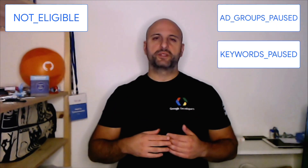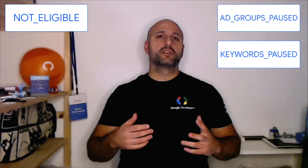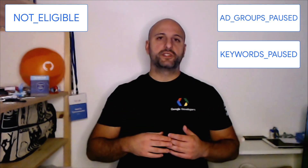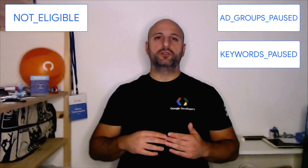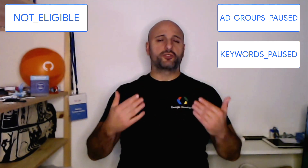For instance, by just looking at a campaign's status or its serving status, you may not notice that its ad groups or its keywords are paused. By looking at a campaign's primary status, you will see that it has value not_eligible, and that in its reasons there may be ad_groups_paused or keywords_paused. This will give you or your users a precise indication of what to change to make your campaign start serving again.